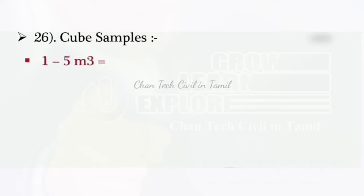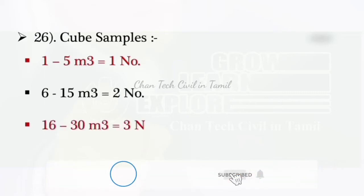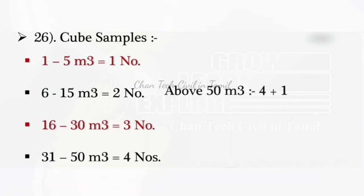For cube samples: 1-5 m³ is 1 number, 6-15 m³ is 2 numbers, 16-30 m³ is 3 numbers, 31-50 m³ is 4 numbers. Above 50 m³ is 4 plus 1, that is 5 number of additions for every 50 m³.